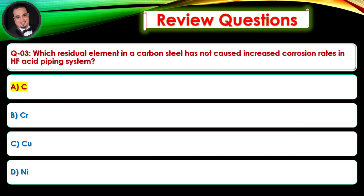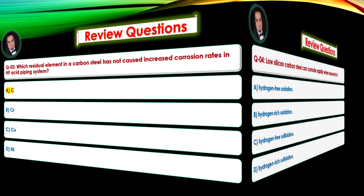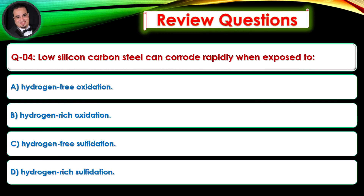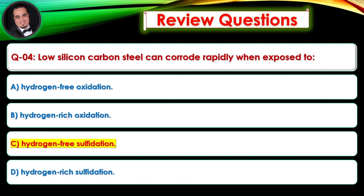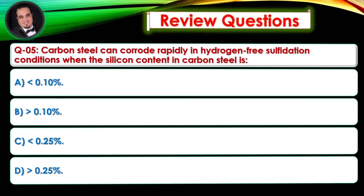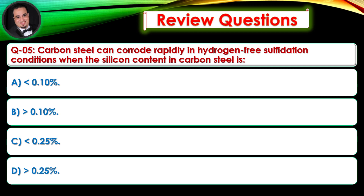Question 4: Low silicon carbon steel can corrode rapidly when exposed to hydrogen-free sulfidation conditions when the silicon content in carbon steel is a certain level. Answer is A. Question 5: Carbon steel can corrode rapidly in hydrogen-free sulfidation conditions when the silicon content in carbon steel is a certain level. Answer is A.